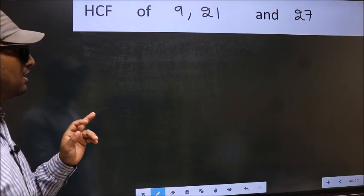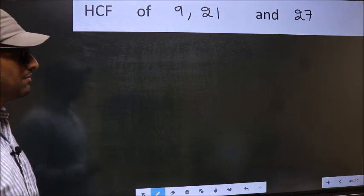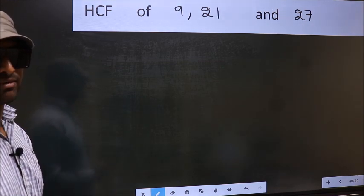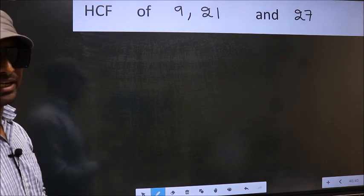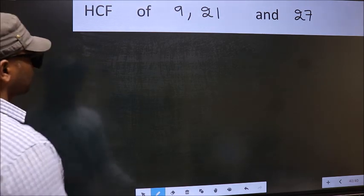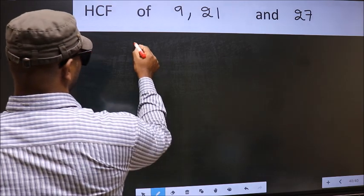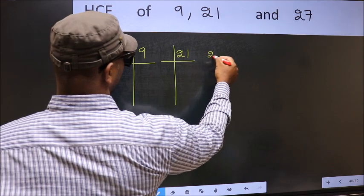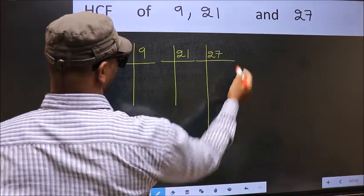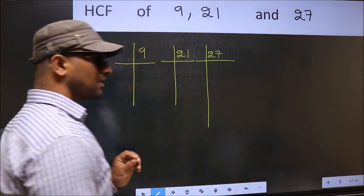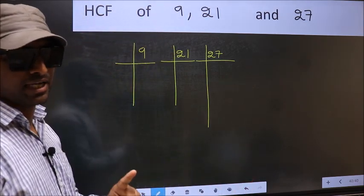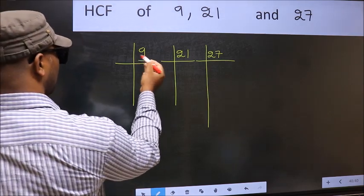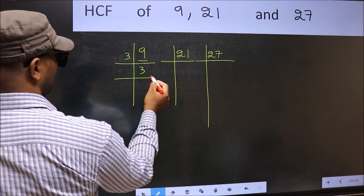HCF of 9, 21, and 27. To find the HCF, we should do the prime factorization of each number separately. What I mean is: 9, 21, 27. This is your step one. Next, here we have 9. 9 is 3 times 3. Now 3...